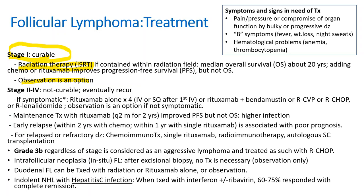Patients with stage 2, 3, or 4 are treated when symptomatic — such as pain, pressure, compromise of organ function by bulky or progressive disease, anemia, or thrombocytopenia. You can use rituximab alone for four cycles, or rituximab with chemotherapeutic agents: bendamustine, R-CVP, R-CHOP, or even R-lenalidomide. Observation is an option if not symptomatic. Maintenance therapy with rituximab every two months for two years improves disease-free survival but not overall survival, at the expense of higher infection rates.